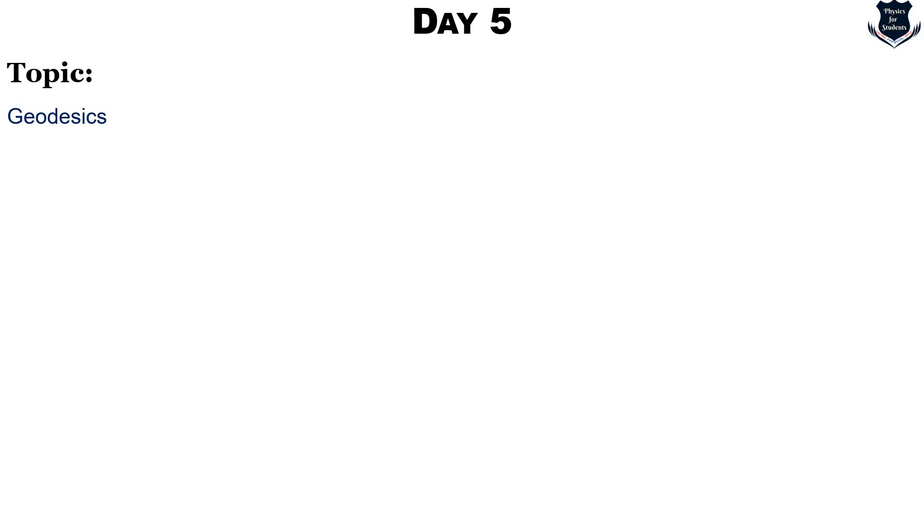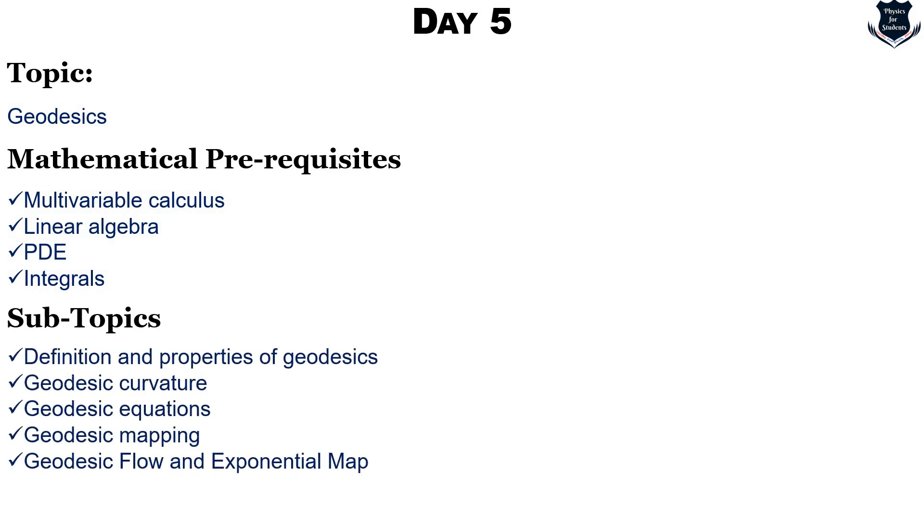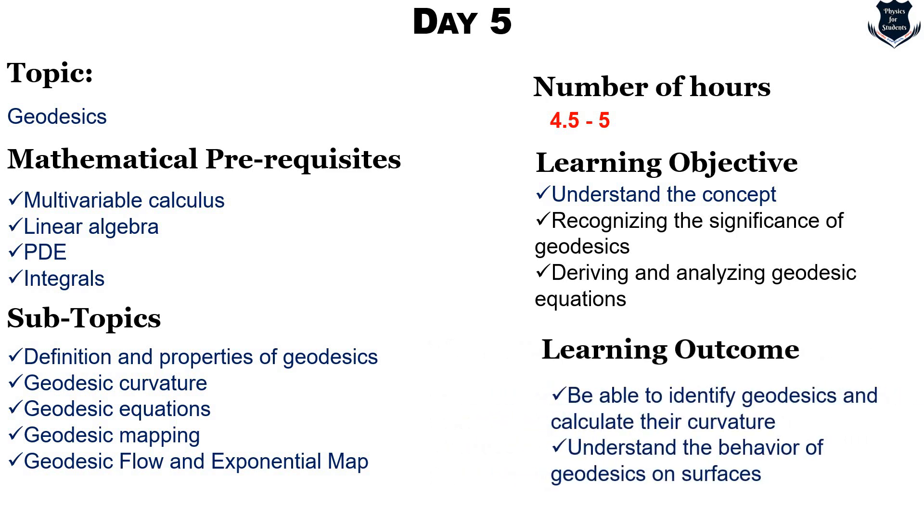Day 5 will be something really, really heavy. That is why I wanted you on day 4 to learn vector fields so that you really relax. These are geodesics, and more or less the mathematical prerequisites are the same. But there are a lot of things: geodesic curvature, geodesic equation, definition, geodesic mapping and flow, and exponential map. Now you see I have given 4.5 to 5 hours for these 5, 6, 4, 5 topics. Geodesics I marked in red because I want you to extend it further because the structure and the equations of geodesics are not that simple. So you take your time. You can take it to 6 or 7 hours. But 6 hours I think is good enough.